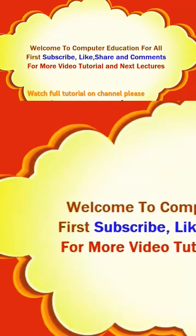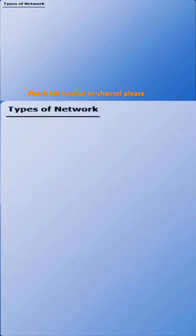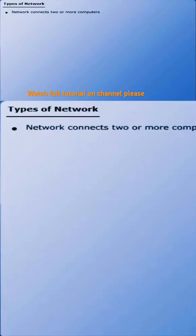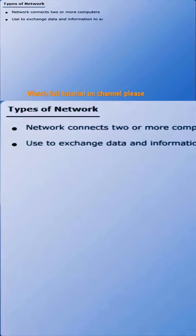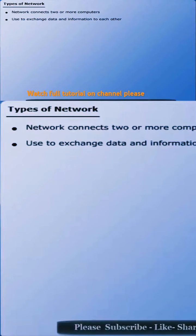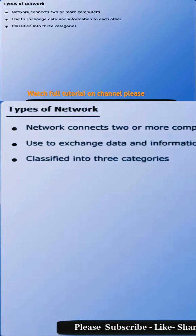Types of network. A computer network connects two or more systems in order to exchange data and information with each other. Computer networks are classified into three broad categories,